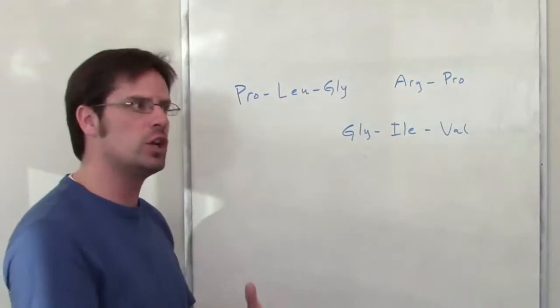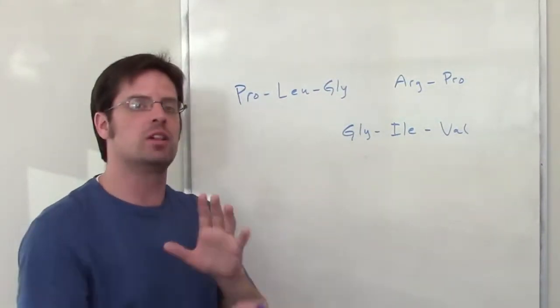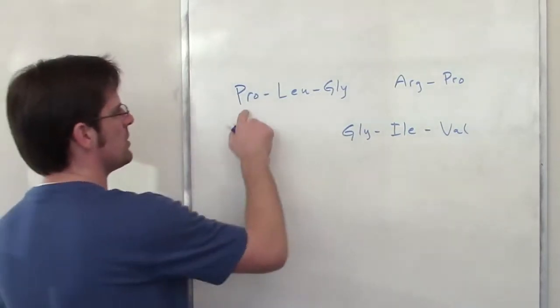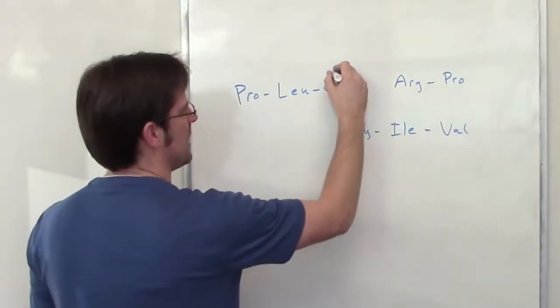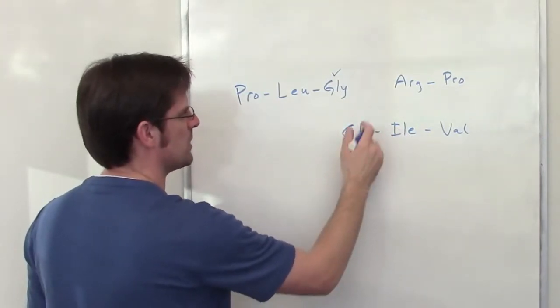What could that original peptide sequence have been? The way you answer this is by looking for overlaps. You'll notice that this small peptide has a glycine in it. Does anything else have a glycine? Well, this one does right here.